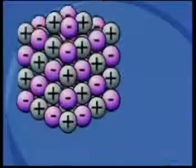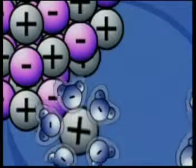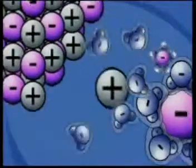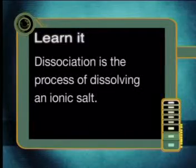When an ionic salt dissolves in water, both cations and anions are present in the solution. Do you remember how cations and anions dissolve in water? This animation should remind you. This process of dissolving an ionic salt is called dissociation. The ions of the solute separate and spread out in the solvent. Please make sure that you understand exactly what we mean by the term dissociation. Dissociation is the process of dissolving an ionic salt.